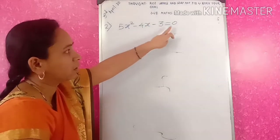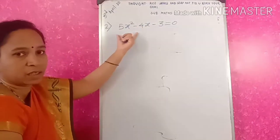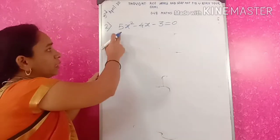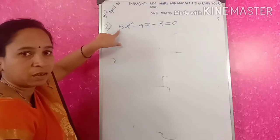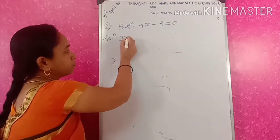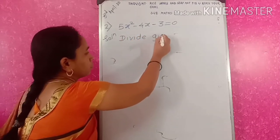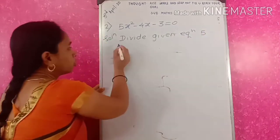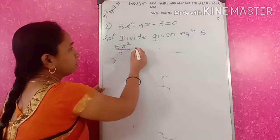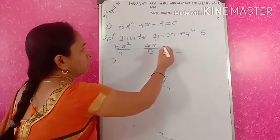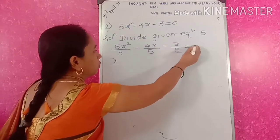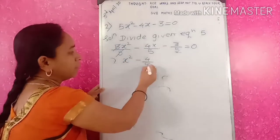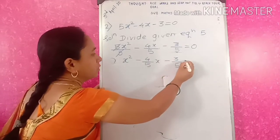If you try to solve this example by factorization you will not get the factors. Such type of example we are going to solve again by the completing square method. In this method the coefficient of x squared should be 1, so we will divide this equation by 5. You will get 5x²/5 minus 4x/5 minus 3/5 equals 0. The 5s cancel, giving x squared minus 4x/5 minus 3/5 equals 0.